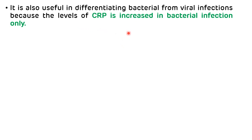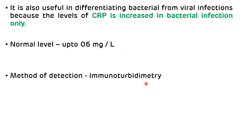The normal level of C-reactive protein is up to 6 mg per liter. The method of detection of C-reactive protein is immunoturbidimetry. Another method for the detection of C-reactive protein is latex agglutination.